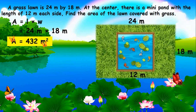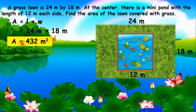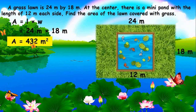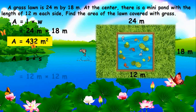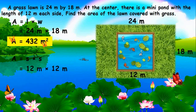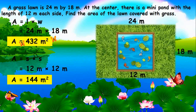The next step is to find the area of the mini square pond by multiplying 12 meters times itself, which equals 144 square meters.